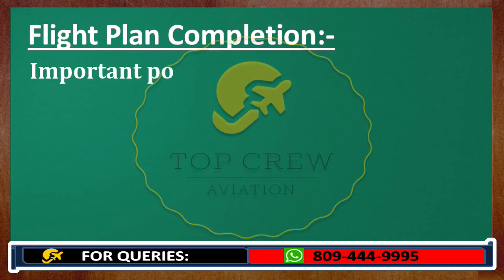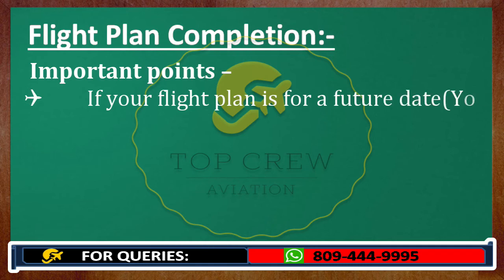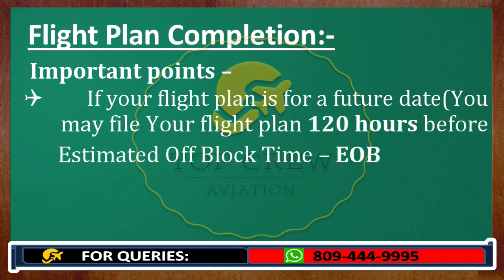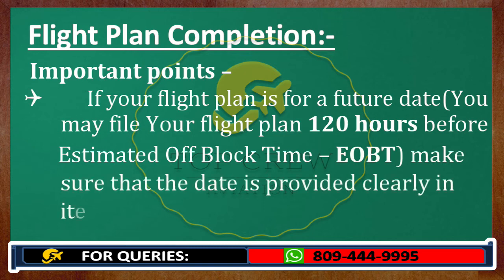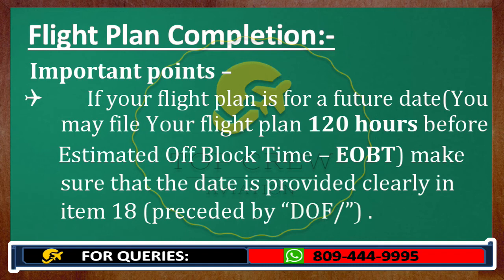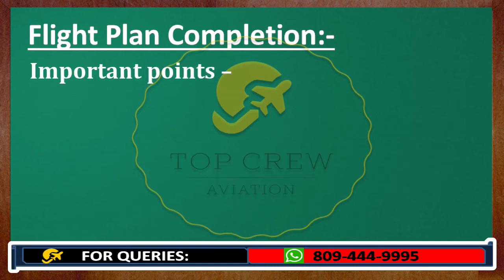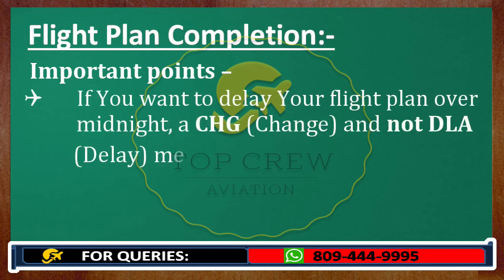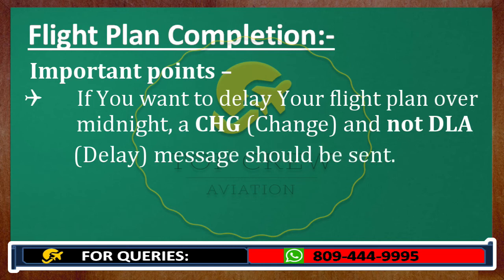These are some important points to remember. If your flight plan is for a future date, you may file your flight plan 120 hours — that is five days — before the estimated off-block time. Make sure the date is provided clearly in Item 18 preceded by 'date of flight.' We will discuss Item 18 later. If you want to delay your flight plan over midnight, a change — not a delay — message should be sent. Make sure we write 'change,' not 'delete.'